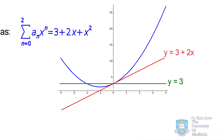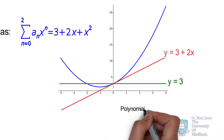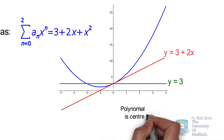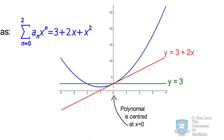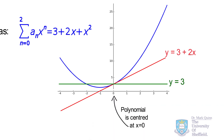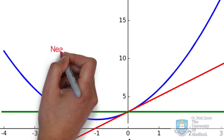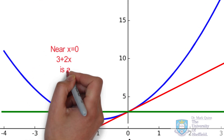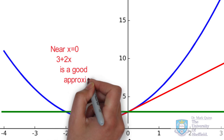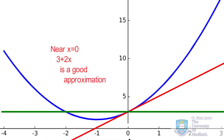Again, for our simple polynomial, watch what happens when we remove terms. As we see, all the terms intersect at x equal to 0. We can say that the polynomial series is centered at x equal to 0. We can also see that at x equal to 0, the lower degree polynomial 3 plus 2x shows a very good approximation to the real function.